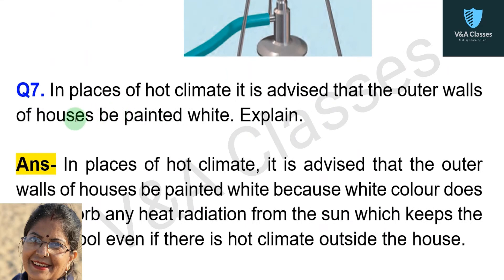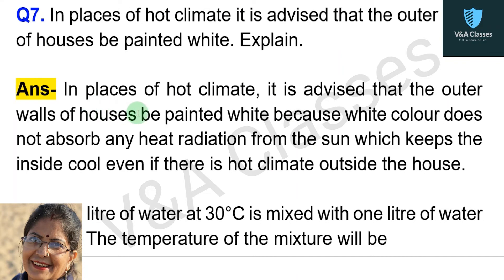Question number seven: in places of hot climate, it is advised that the outer walls of houses be painted white — explain. Answer: white color does not absorb any heat radiation from the sun, which keeps the inside cool even if there is a hot climate outside the house.